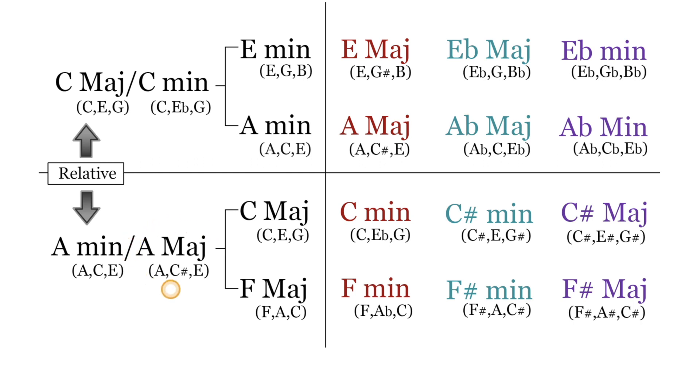And if you're looking at the key of A major, the diatonic three and six chord are C sharp minor and F sharp minor. So the chromatic medians for A major would be C major, C minor, and C sharp major, as well as F major, F minor, and F sharp major.